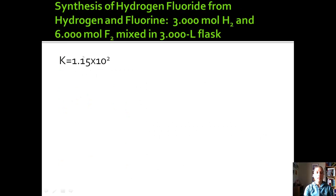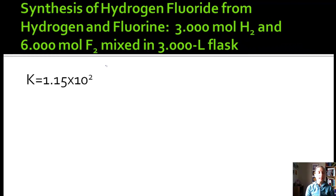Let's start right off with an example. We've got synthesis of hydrogen fluoride from hydrogen and fluorine. We have three moles of H2 and six moles of F2, and they're mixed in a three liter flask. So before we even go on, let's just calculate molarities real quick, get that out of the way.